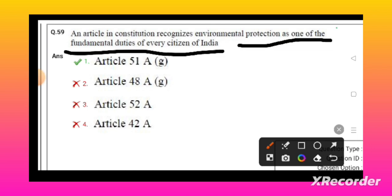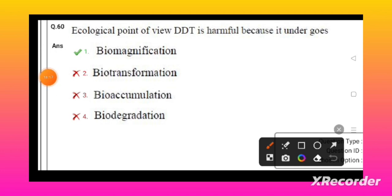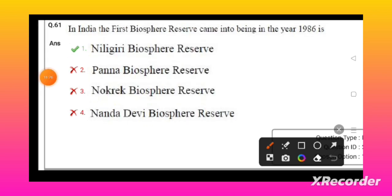From an ecological point of view, DDT is harmful because it undergoes biomagnification. In India, the first biosphere reserve came into being in the year 1986 - the Nilgiri Biosphere Reserve is the first biosphere reserve.